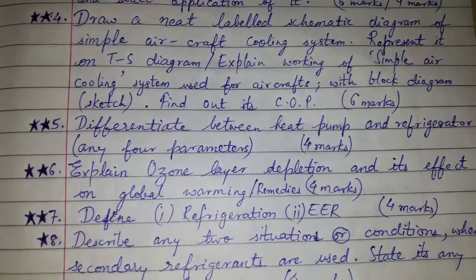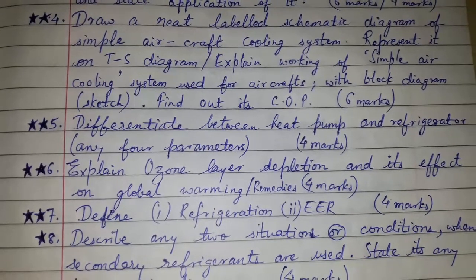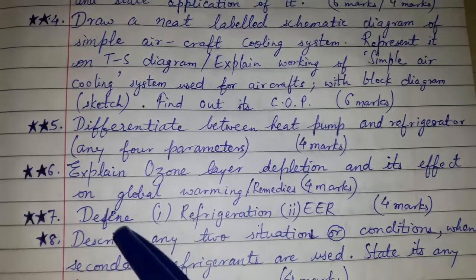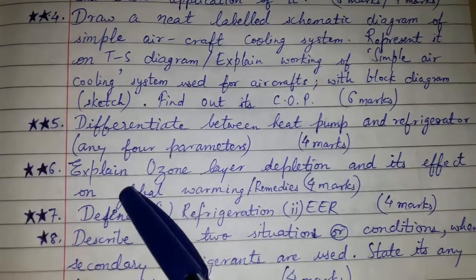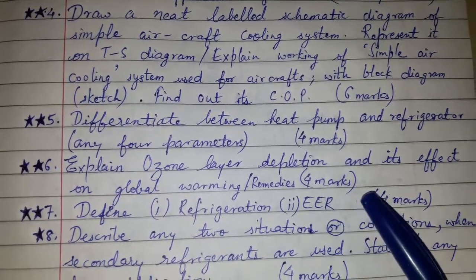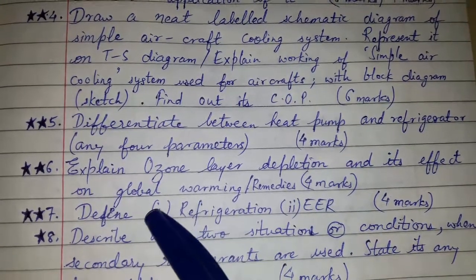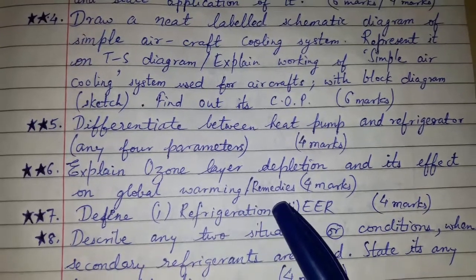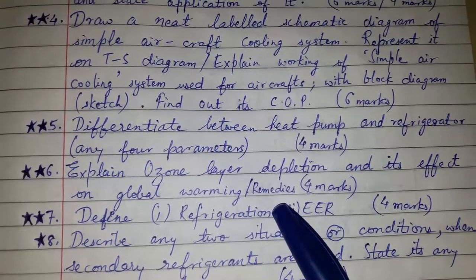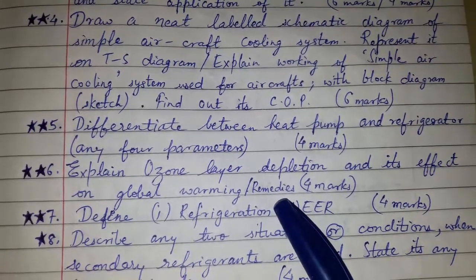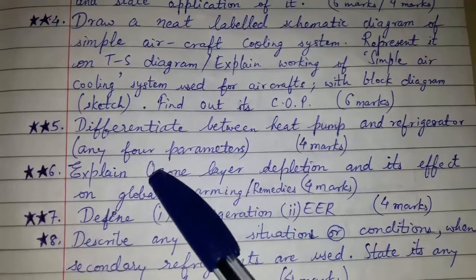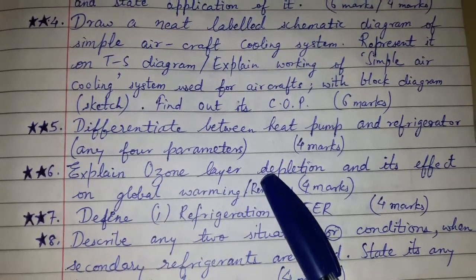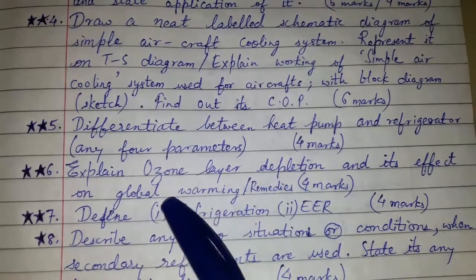Prepare more parameters for the heat pump vs. refrigerator differentiation, as it can be asked for more marks. Question six: Explain ozone layer depletion and its effect on global warming, and the remedies for the same. This has been asked in different parts — once only remedies, and another time ozone layer and its effects.